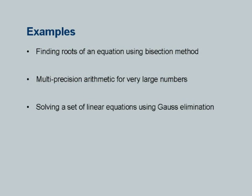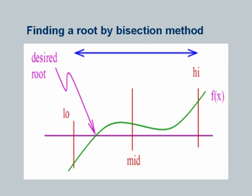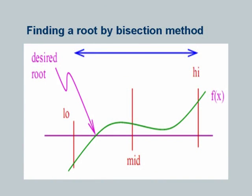Let's quickly go through this particular example of finding roots of an equation through the bisection method. The basic method is very simple: if we have an equation represented by f(x) equals something — for example, a cubic equation like ax³ plus bx² plus cx plus d equals 0. A cubic equation always has one real root; it might have three real roots or one real root and two complex conjugate roots.